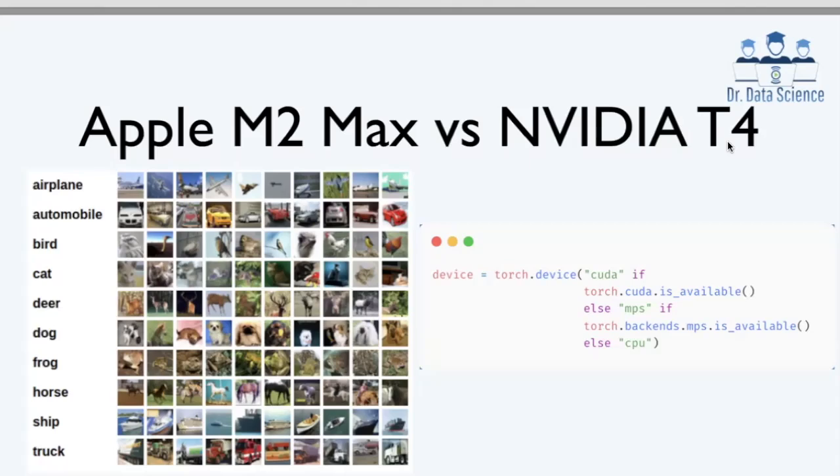Hello everyone, Dr. Data Science here. In today's video, we want to answer a very important question. Can you use the Apple M2 Max GPU cores along with metal performance shaders or MPS for training deep learning models?